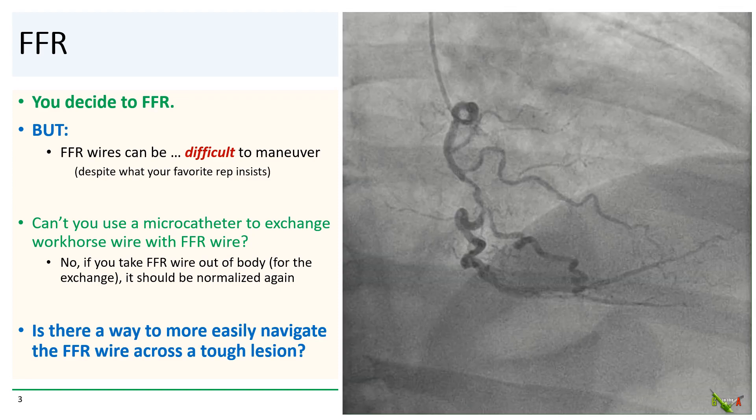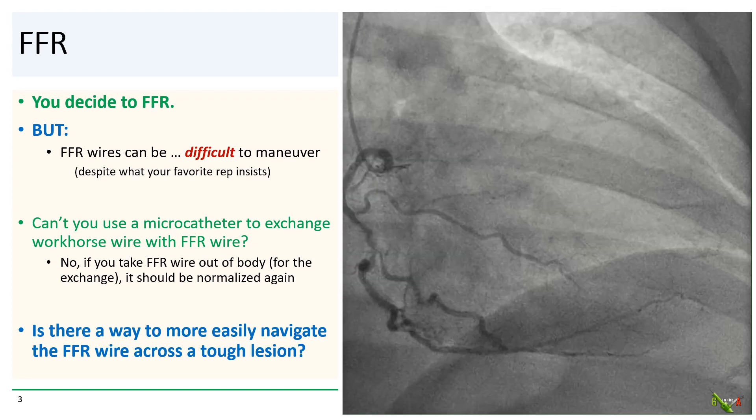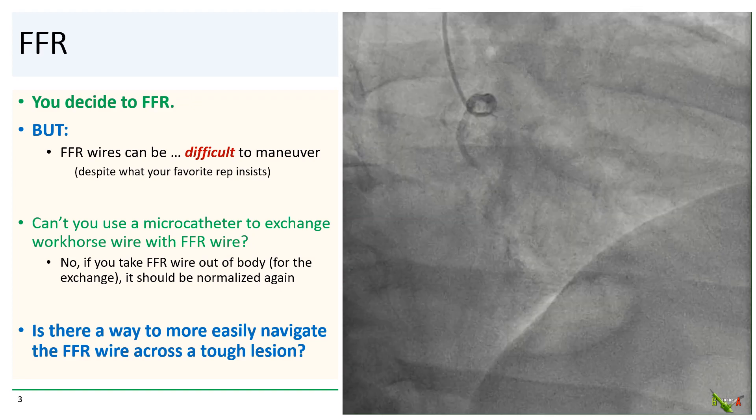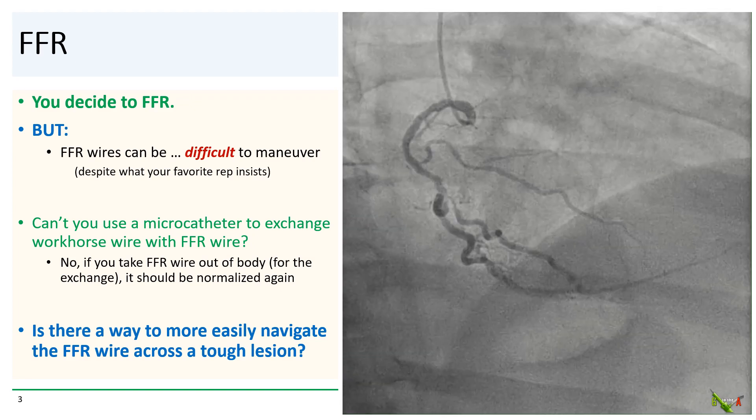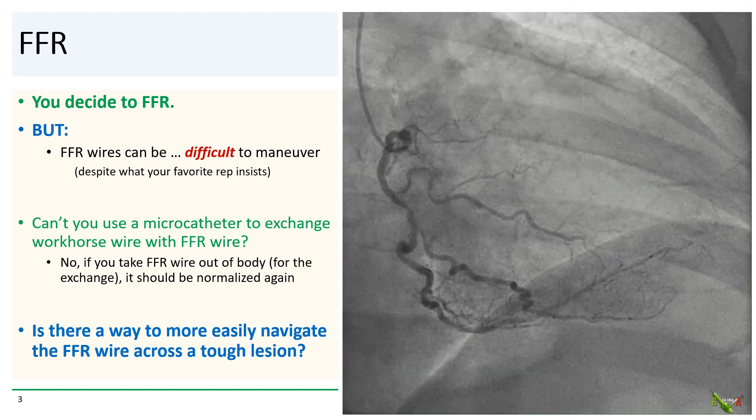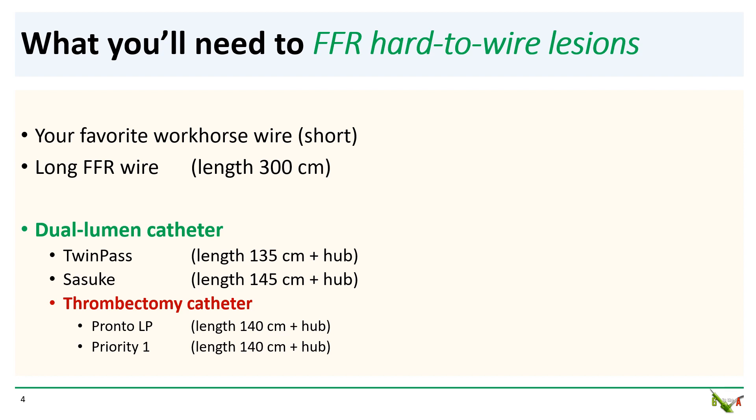Is there a way that you can more easily navigate the FFR wire across a tough lesion? There is actually a fairly simple way to get your FFR wire through a tough lesion. You'll need three pieces of equipment: your favorite workhorse wire, a long 300-centimeter FFR wire, and a dual-lumen catheter.